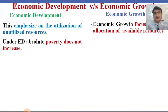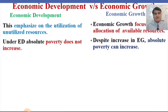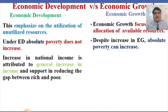Under economic development, absolute poverty does not increase. Despite increase in economic growth, absolute poverty can increase — because output might increase due to increase in production of the manufacturing sector where only 20% of people contribute, leaving 80% unaffected. In economic development, increase in national income is attributed to a general increase in income and supports reducing the gap between rich and poor.